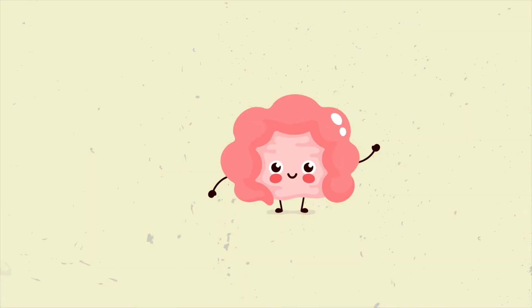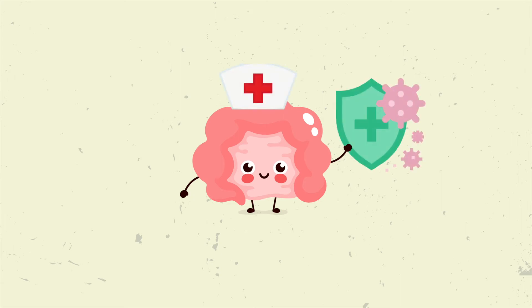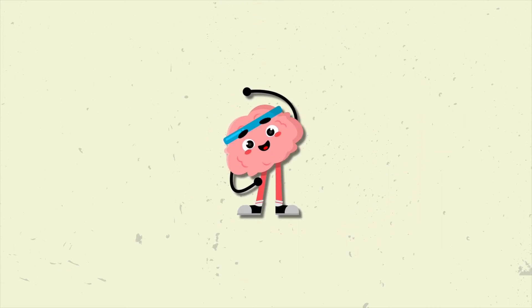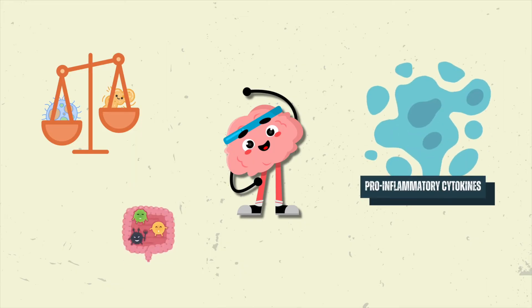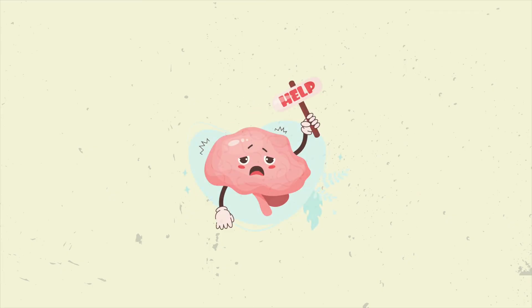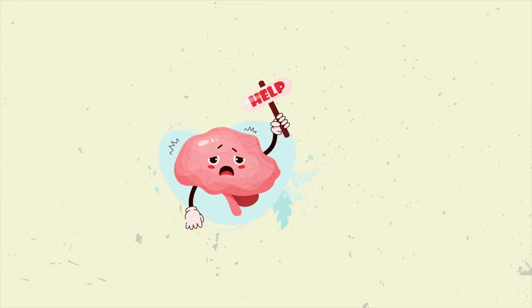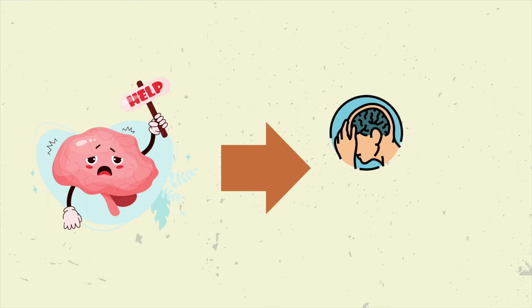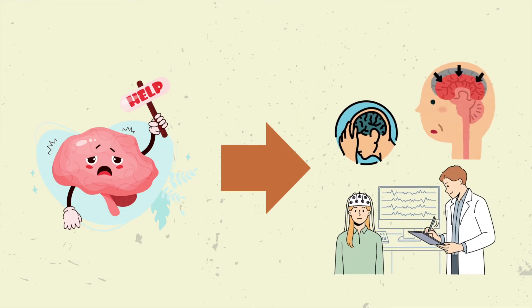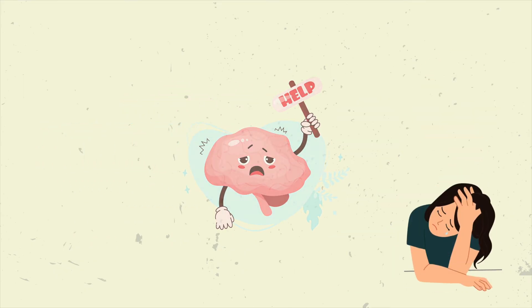The gut microbiome can also modulate the immune system, which in turn affects brain health. Microbial imbalance or dysbiosis can lead to the production of pro-inflammatory cytokines, which can enter the brain and contribute to neuroinflammation. This chronic inflammation in the brain is a significant factor in many neurological and psychiatric conditions, including depression, Alzheimer's disease, and multiple sclerosis.